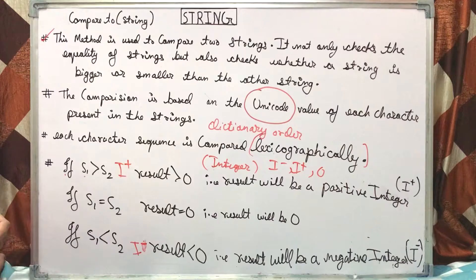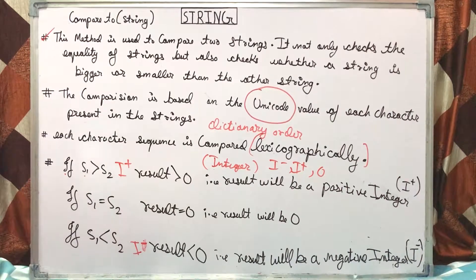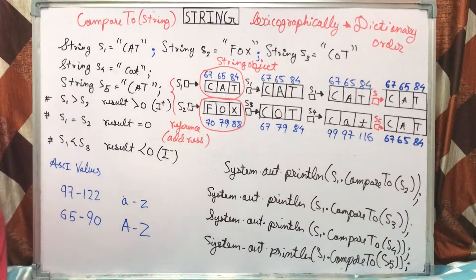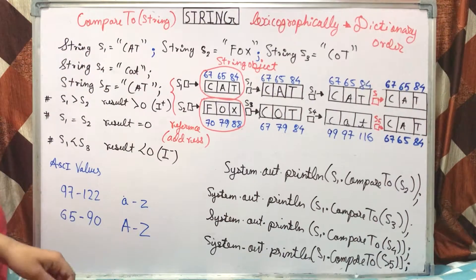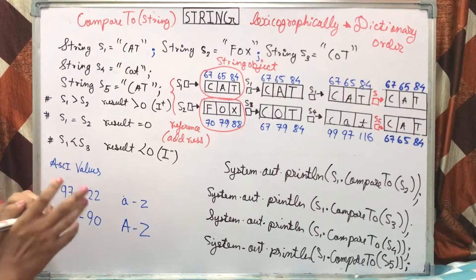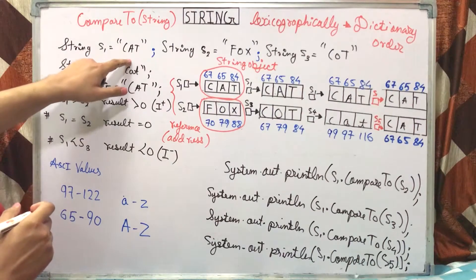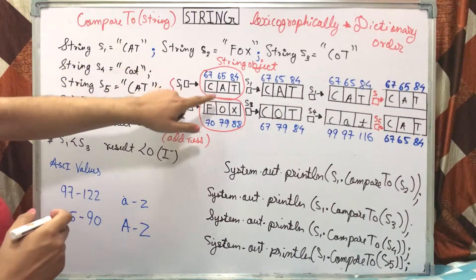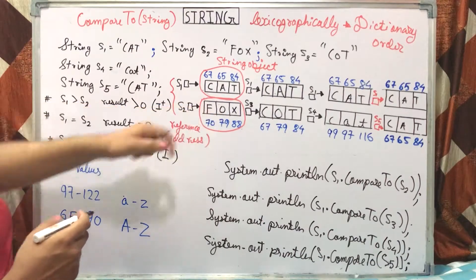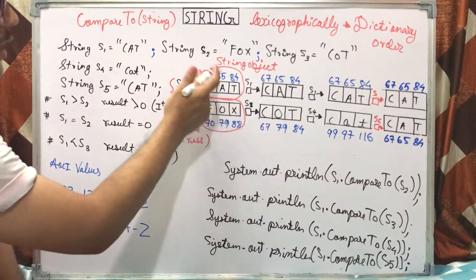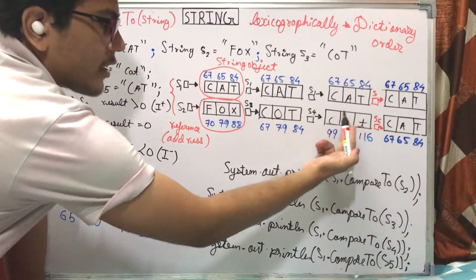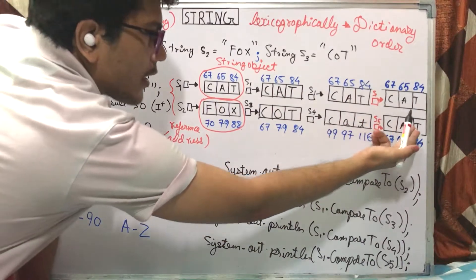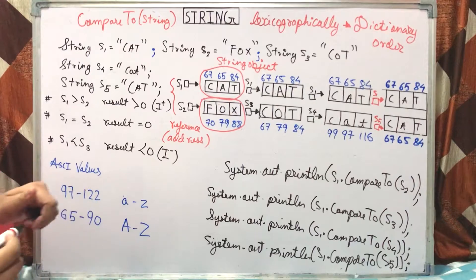Now let's write these points. S1 is uppercase CAT. S2 is FOX. S3 is COT. S4 is lowercase cat. S5 is uppercase CAT.